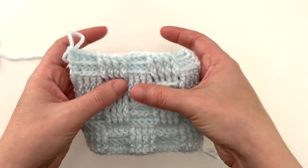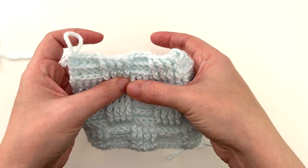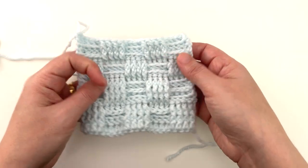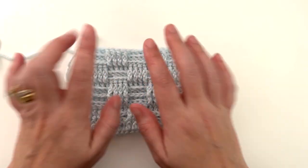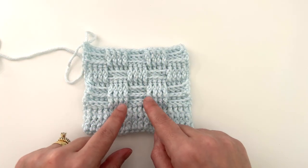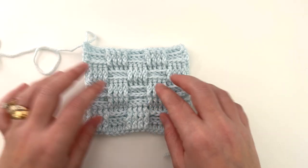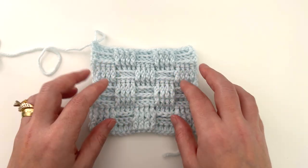So since you have front posts alternated with back posts, blocks of them, you wind up with a double thickness fabric, which I think is nice and cozy for a scarf or a blanket. But keep in mind, this is a little bit of a yarn eater. So you're going to need a little more yarn for this stitch than some others.